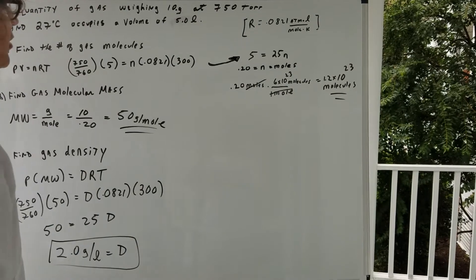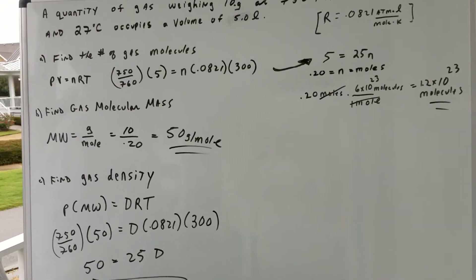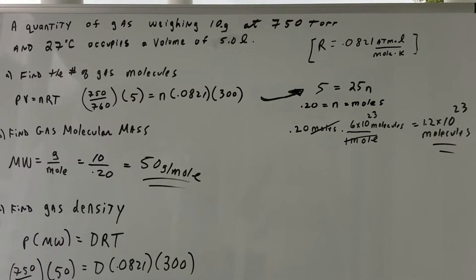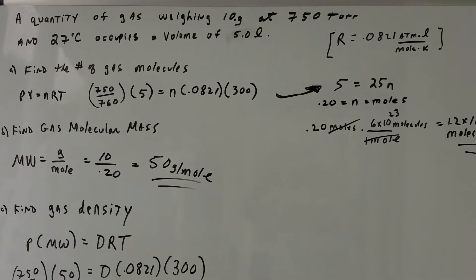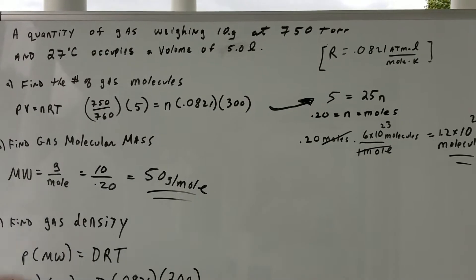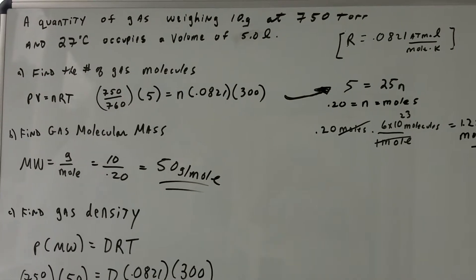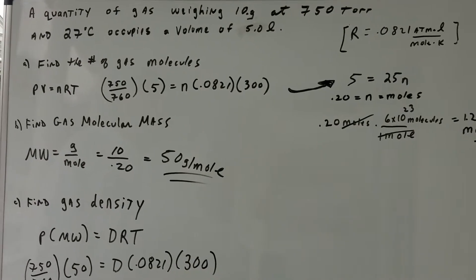In this problem, this is a really good question involving gases. It says that a quantity of gas weighs 10 grams at 750 Torr pressure, 27 degrees Celsius, and the volume occupied is 5 liters. And I want you to find the number of gas molecules here.